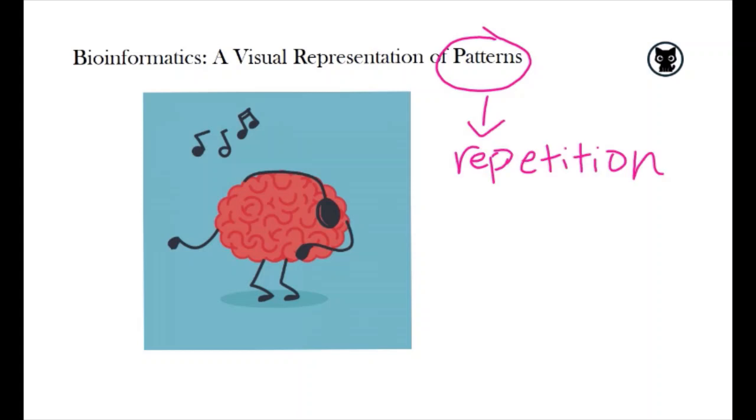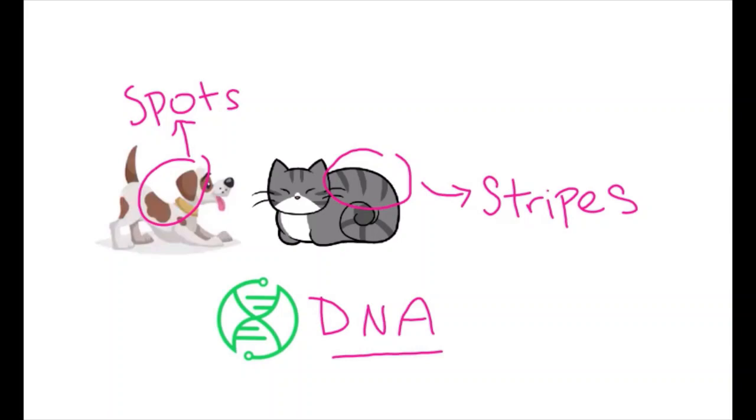Patterns at its base form is just repetition. We can see patterns everywhere in nature, from the stripes on our cat to the spots on our dog, and even to the repetition of base pairs within our DNA.